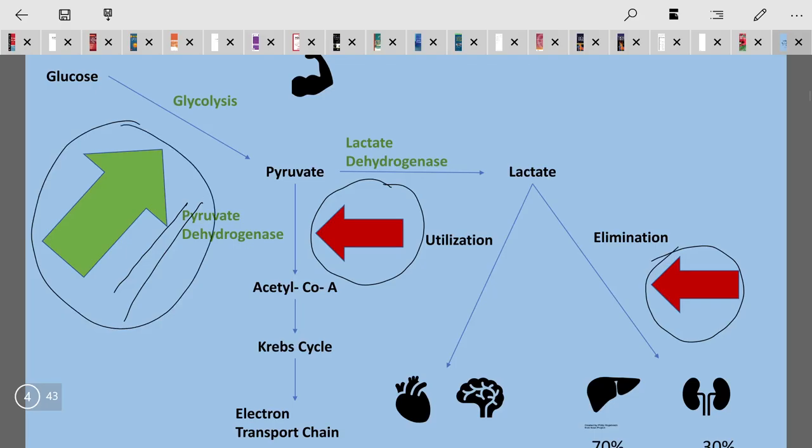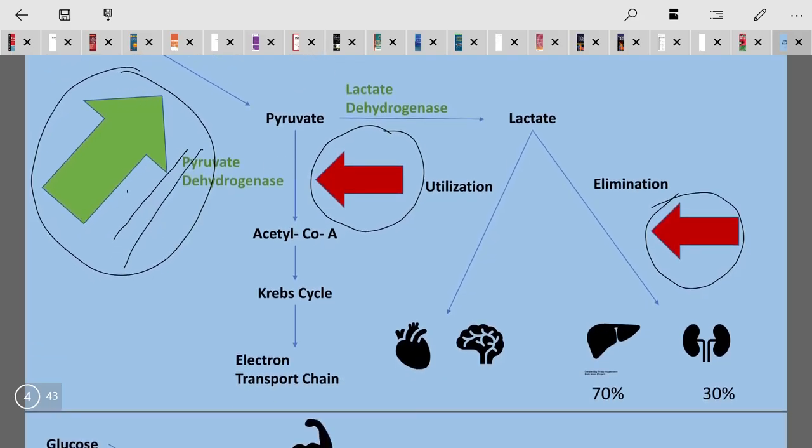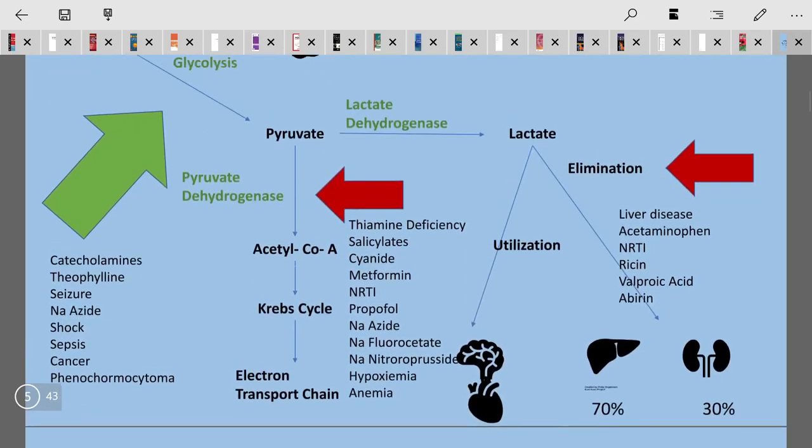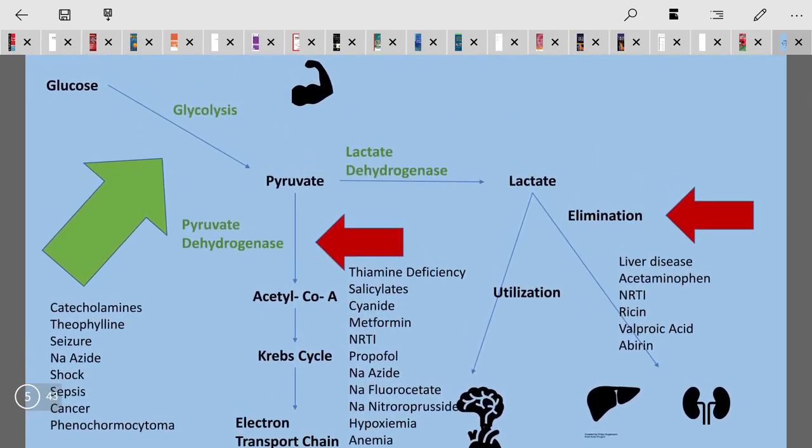These are the main steps where lactic acidosis might be seen due to deficiencies or stimulation of these pathways. Green is stimulation, red is inhibition. So when there is inhibition or a setback to these pathways, then lactic acidosis will be occurring.